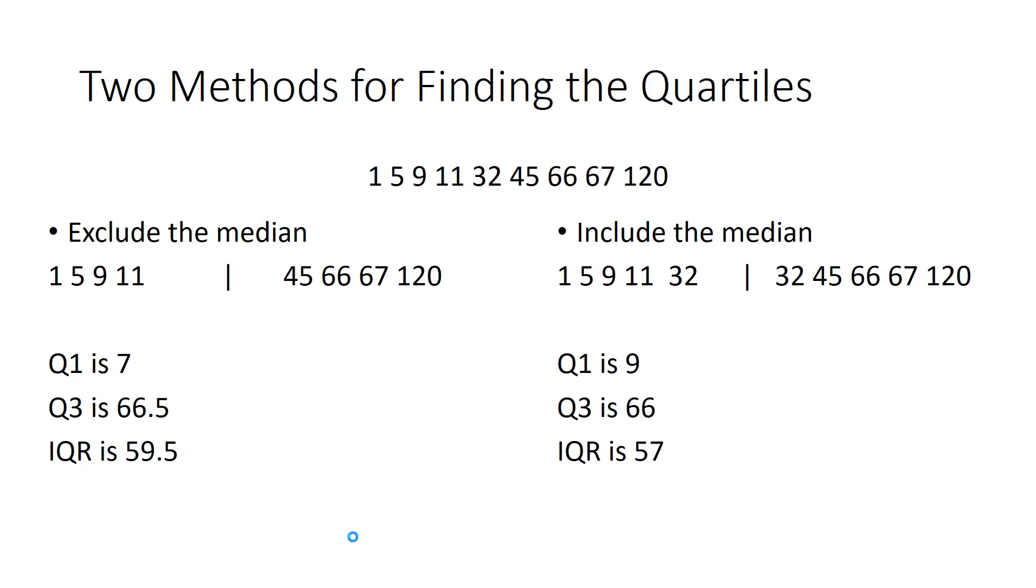If we include the median, the median of the lower half is actually going to be the third largest number, that 9, and the median of the upper half of the data is going to be the number 66. So, in this case, our interquartile range is going to be 66 minus the 9. So, that gives us 57 for the interquartile range.